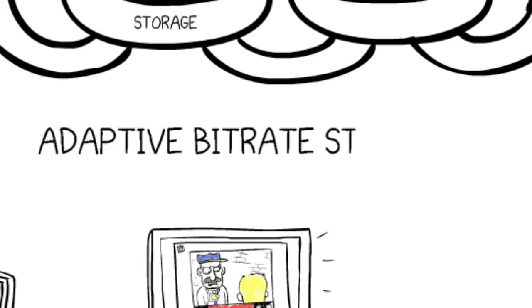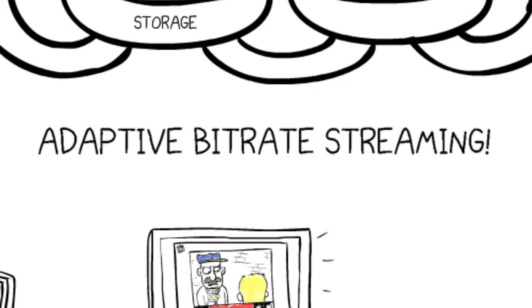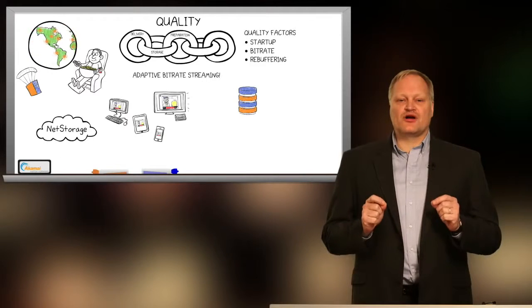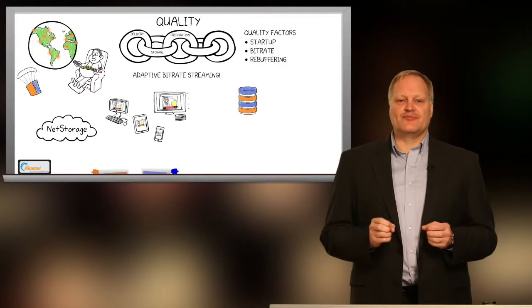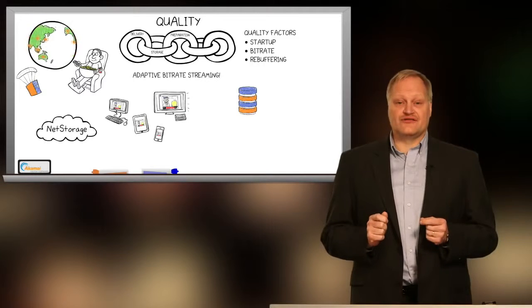To address this problem, adaptive bitrate streaming is used. With adaptive bitrate, multiple copies or renditions of the master video are created at different quality levels.